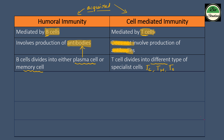T cells differentiate into different types of specialized cells: cytotoxic cells, helper cells, suppressor cells, and memory cells. This is the third difference between humoral and cell-mediated immunity.